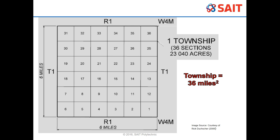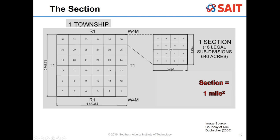Each section, which is one mile by one mile, is broken up into 16 legal subdivisions - LSDs. The counting works the same way: starting with one in the bottom right-hand corner and snaking back and forth all the way up. Each legal subdivision is a quarter of a mile by a quarter of a mile.